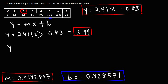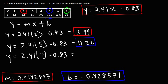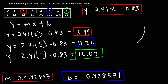Let's try x = 5: 2.41×5 − 0.83 = 11.22, which is very close to 11.2 — an even better approximation. Now let's try x = 7: we get 16.04, very close to 16. So we can see that this linear equation fits the observed data very well.